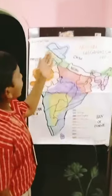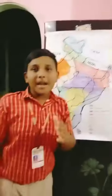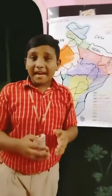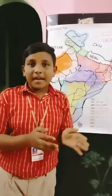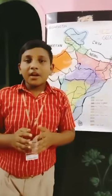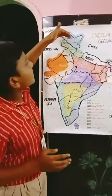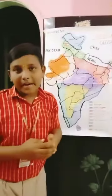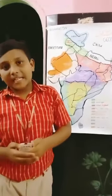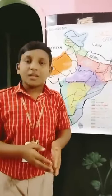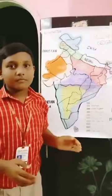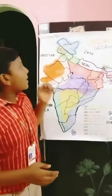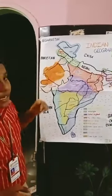Coming to the point of Trans Himalayas. Trans Himalayas are mainly composed of volcanic rocks and granites which are related to the Neogene and Paleogene age. These Trans Himalayas also include the Karakoram, Zaskar, and the Ladakh Ranges. These Ladakh Ranges are located at Himachal Pradesh and also Ladakh.